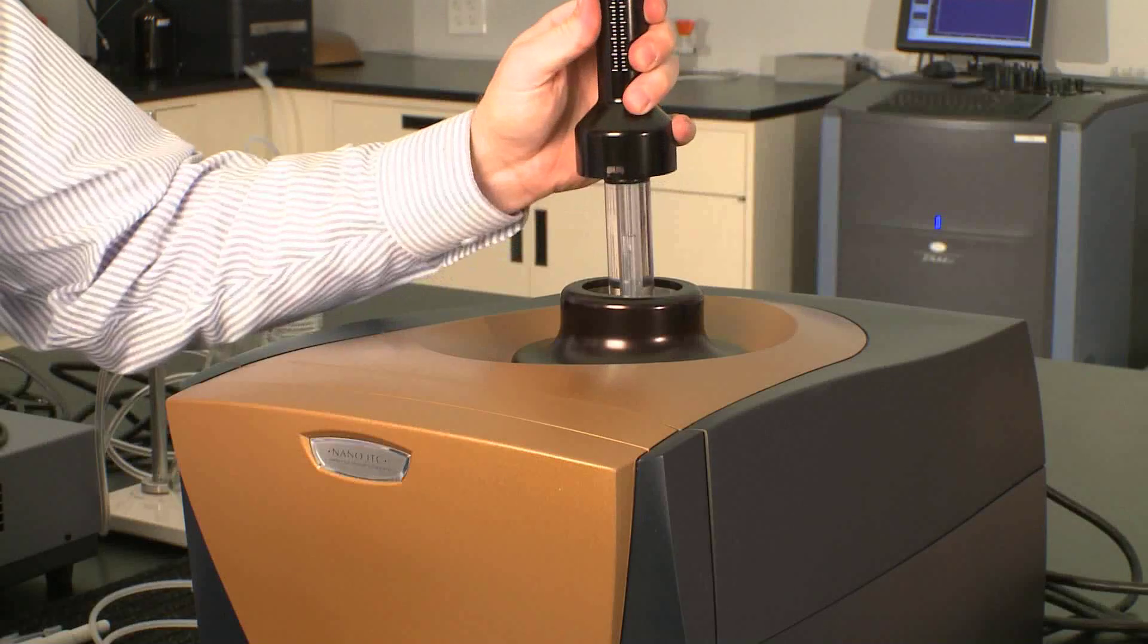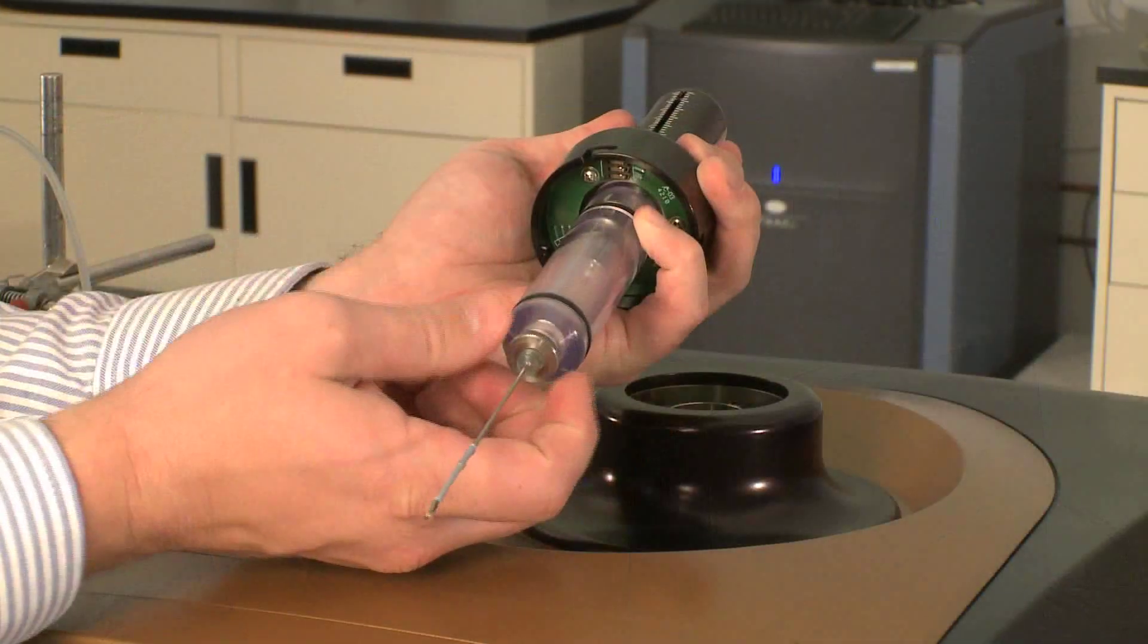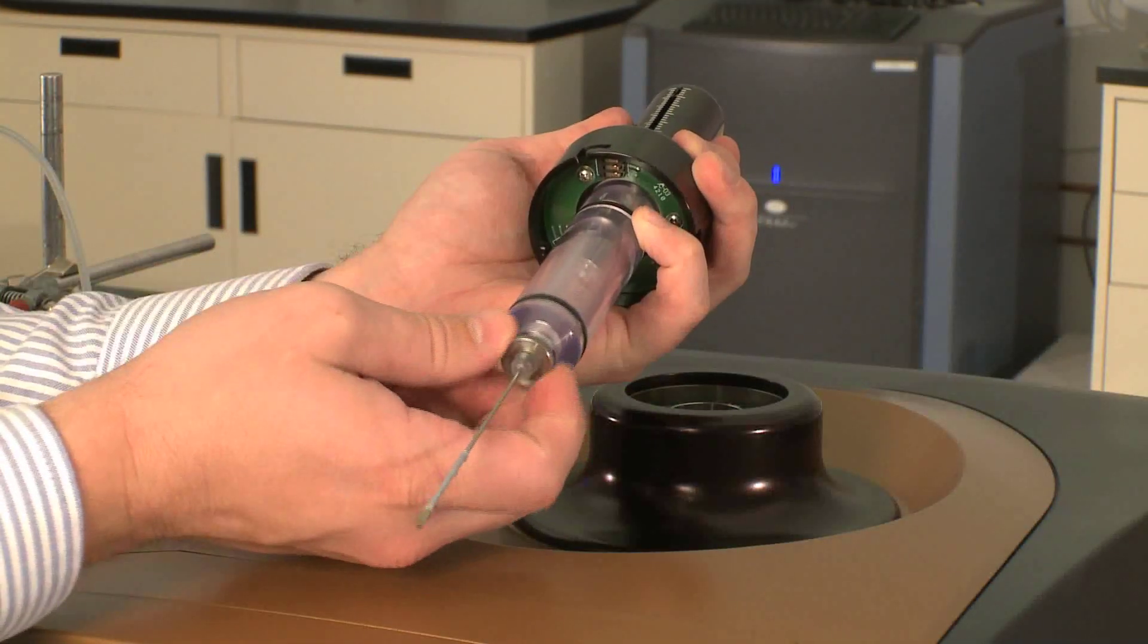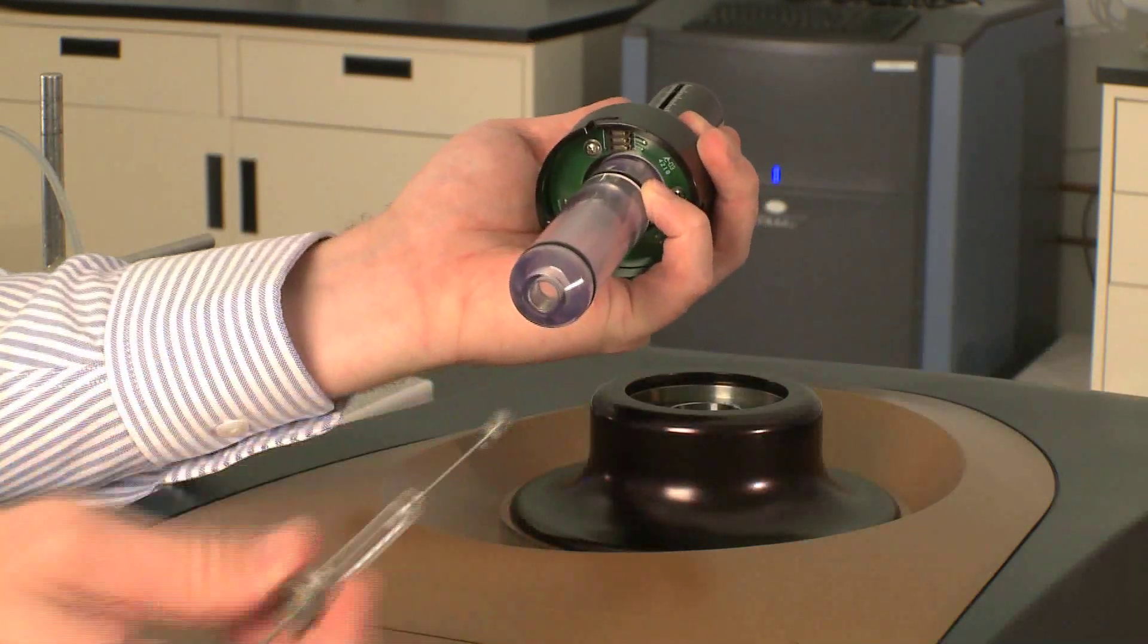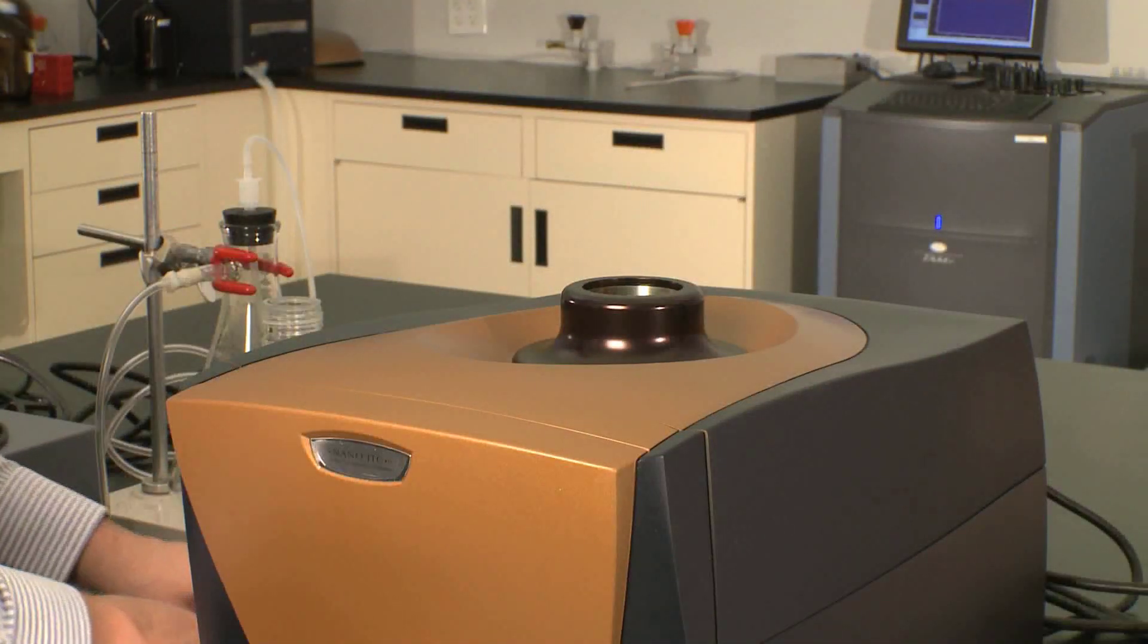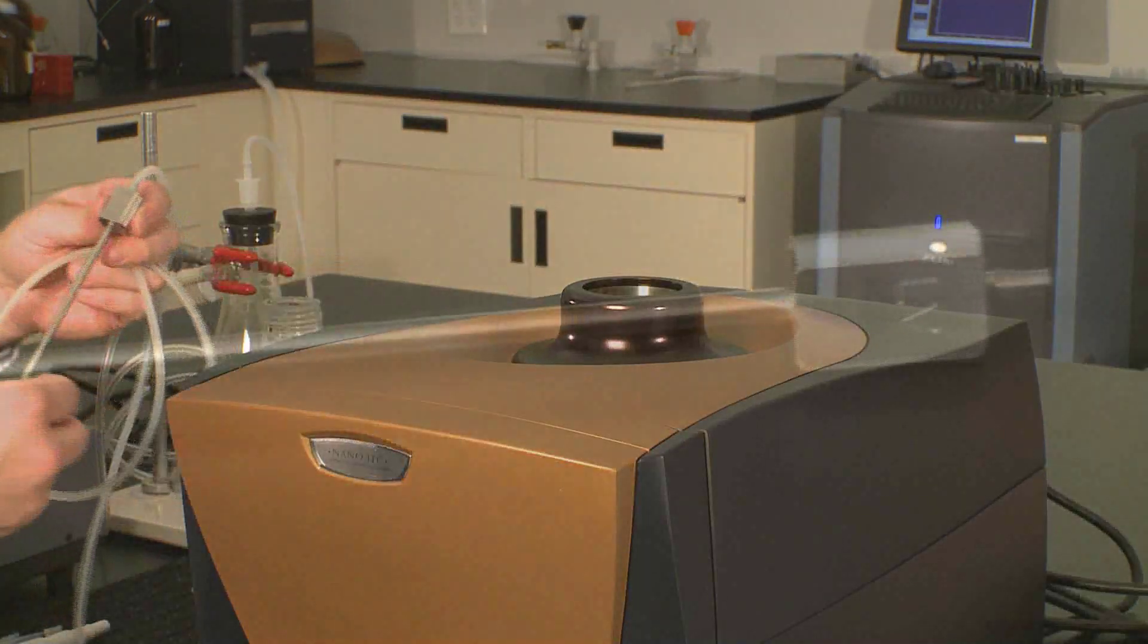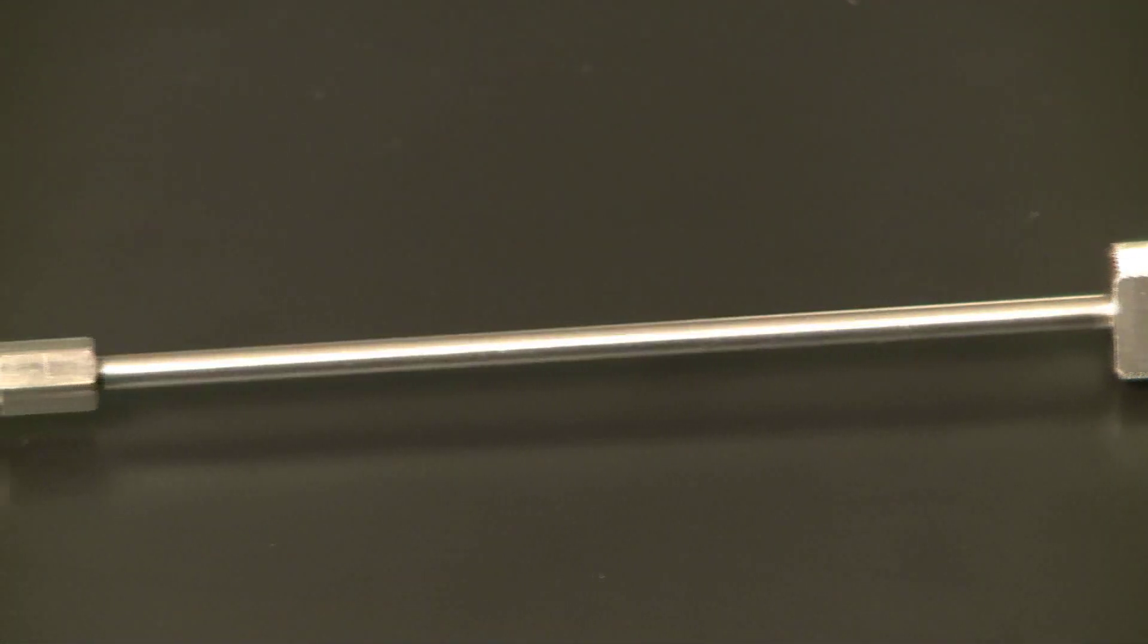First, remove the burette handle and remove your syringe to be cleaned. Then we can use the cleaning tool that's provided with the instrument. This is a low volume instrument, so we have a low volume cleaning tool.